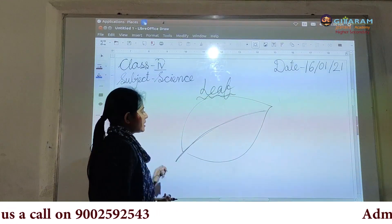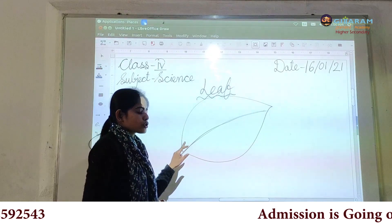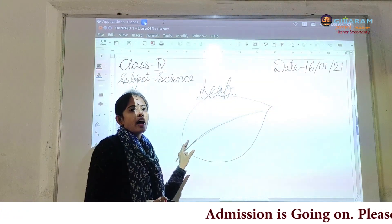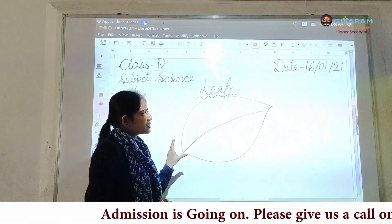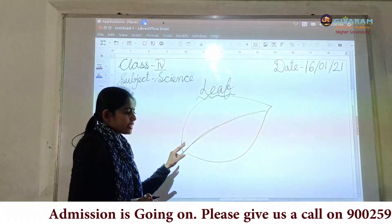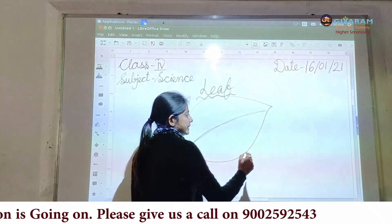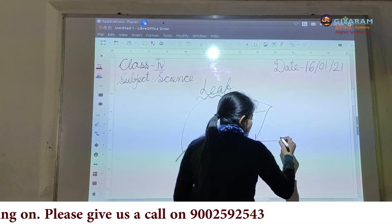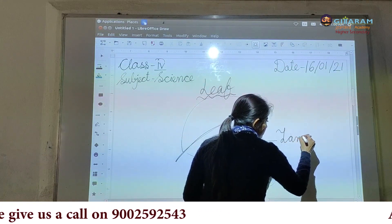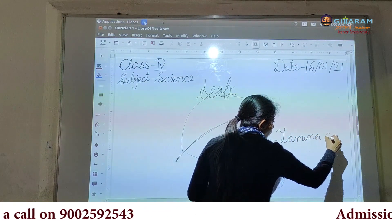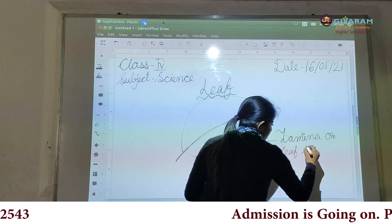Here in the leaf, you can notice this flat and broad portion of the leaf. What is the name of this flat and broad portion? This flat and broad portion is known as the lamina or leaf blade.